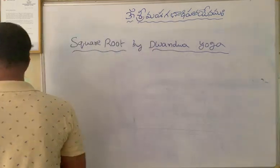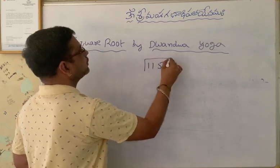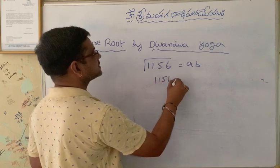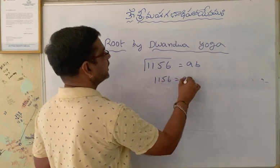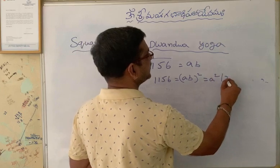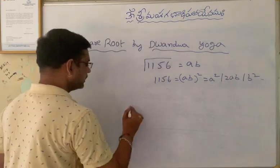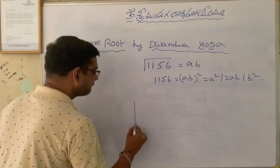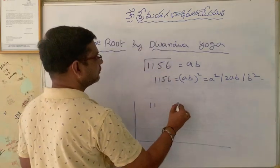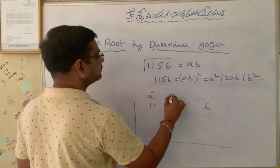Let us consider another example: 1156. The square root of 1156 is AB, then 1156 is AB whole square, that is A square slash 2AB slash B square. Now we split 1156 into three terms.